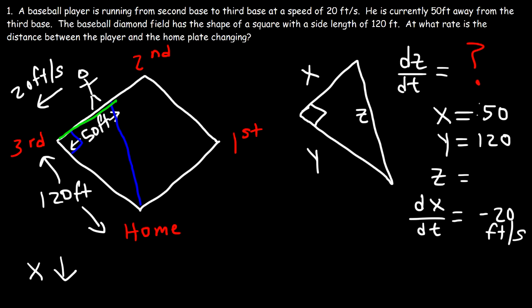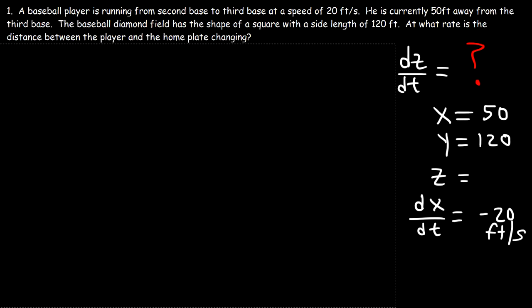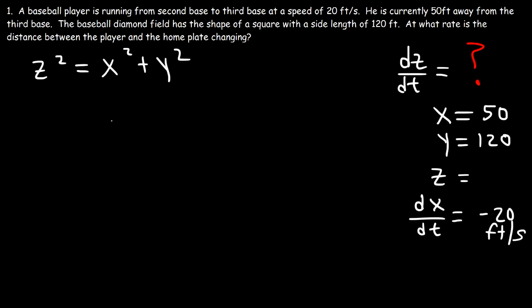So now that we have this information, we no longer need the pictures. Let's get rid of the pictures at this point and make some useful space. Now we still had a right triangle. So we have this equation: z squared is equal to x squared plus y squared. Let's calculate z.